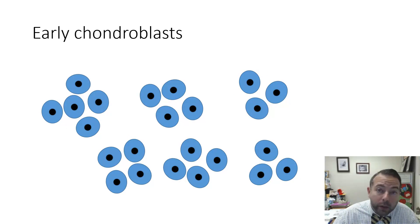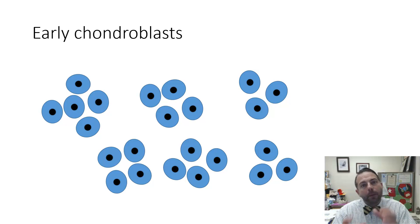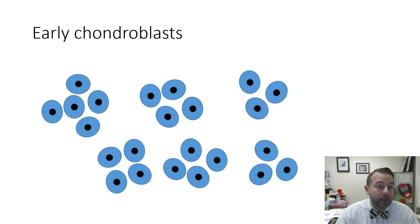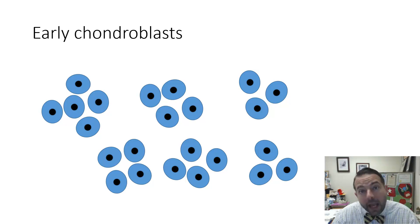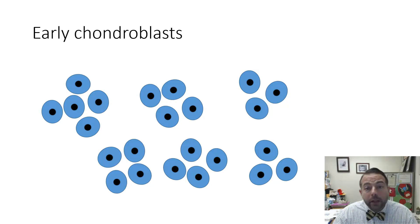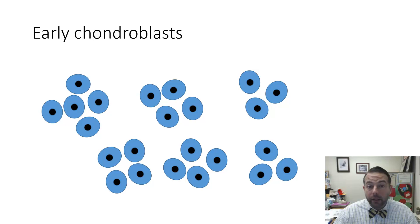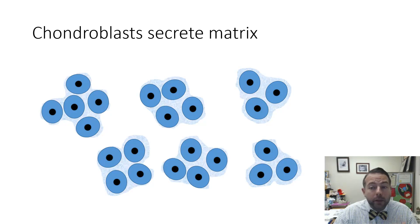You can see that we have more cells and the cells have changed their shape. Remember that suffix 'blast' — we saw that with fibroblasts in connective tissues proper. That suffix blast indicates a cell that is very metabolically active and a cell that is rapidly secreting. Speaking of which, these early chondroblasts are going to begin secreting the extracellular matrix characteristic of cartilage tissue, and you see the matrix starting to fill in between the chondroblasts.